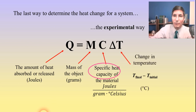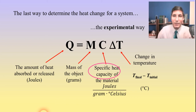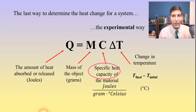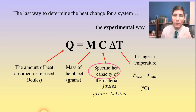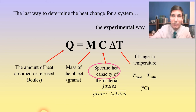Delta T is the change in temperature of the material. That's going to be found by taking the final temperature and subtracting the initial temperature, and that can be in degrees Celsius. You'll find that if you do that in Kelvins it gives you the same answer, so degrees Celsius or Kelvins are actually interchangeable for this particular equation.